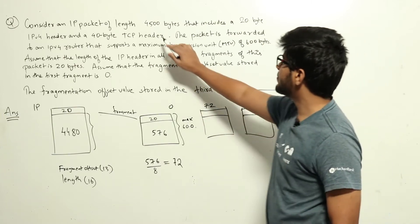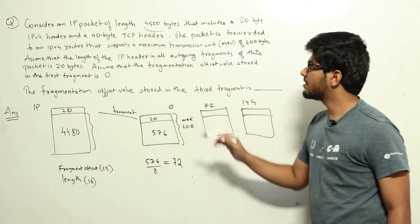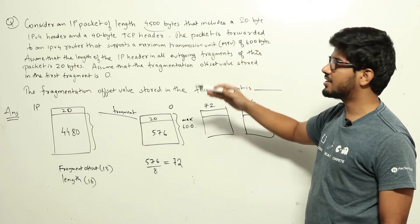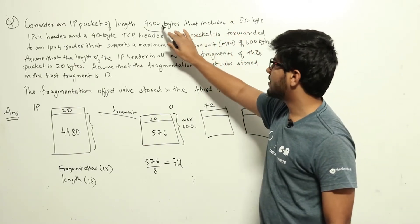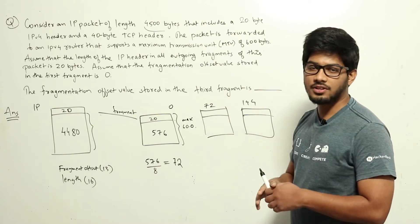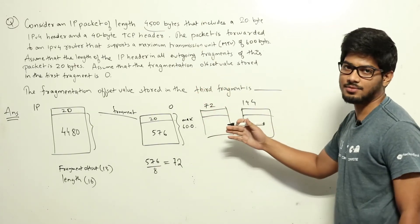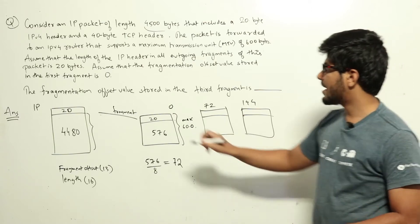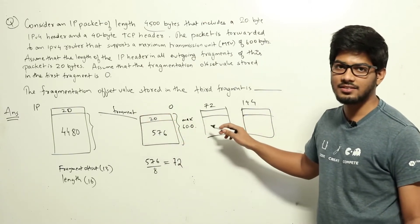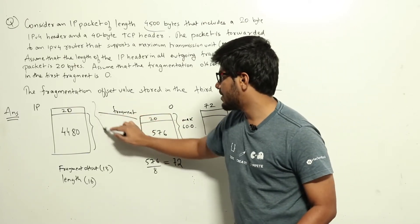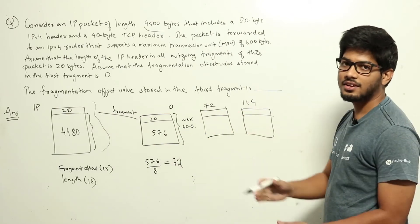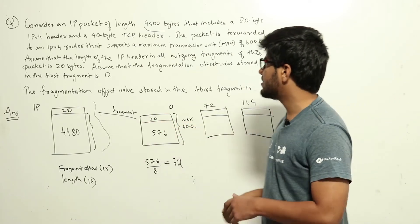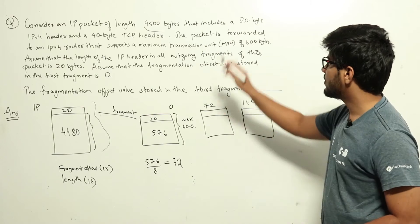Fragmentation means we have a packet of length 4500 bytes, but some transmission channels cannot send a packet of that size. The router knows the maximum size the channel can accept — the MTU — and divides the IP packet into smaller packets. Each packet has a fragment offset to indicate its sequence position in the original packet. You can refer to video lectures to understand fragmentation in detail. Now we will work through this question.